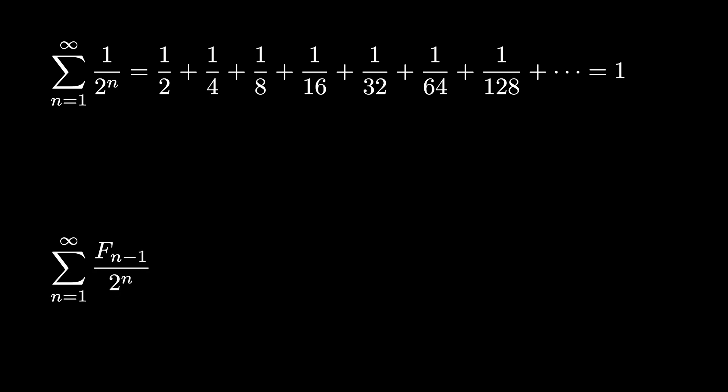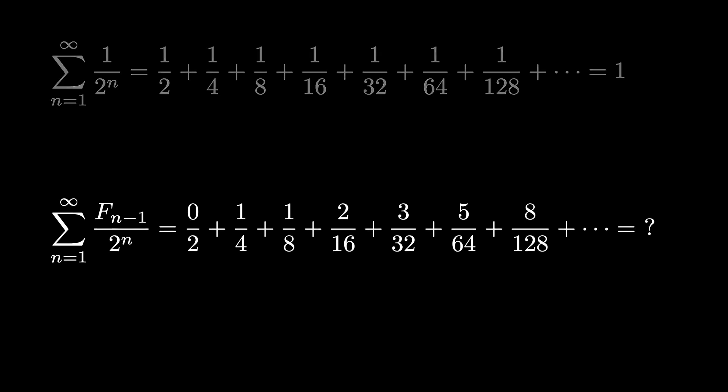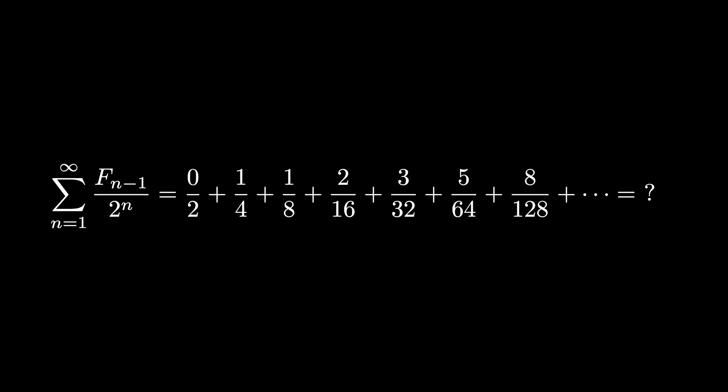Now what if we make a small change and multiply each power of 1/2 by the (n minus first) Fibonacci number? Then we're looking at the infinite sum from n equals 1 to infinity of F_(n-1) divided by 2^n, which starts 0/2 plus 1/4 plus 1/8 and so on. Can we find the value of this infinite sum? It turns out there are lots of techniques, but one of them involves using a very simple board game.